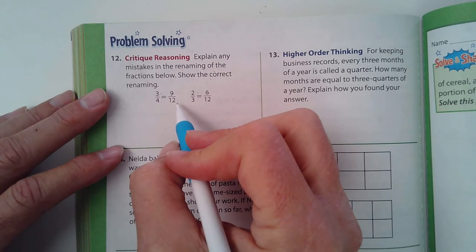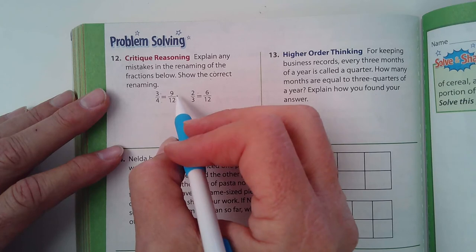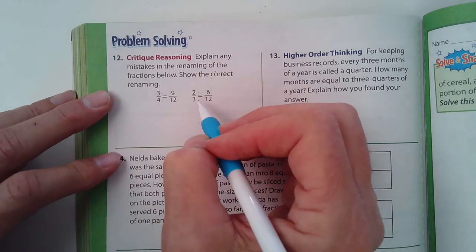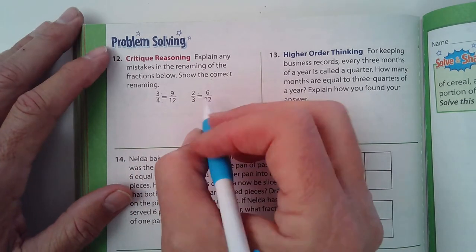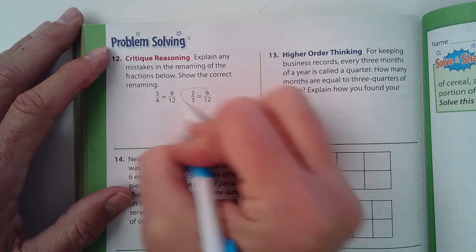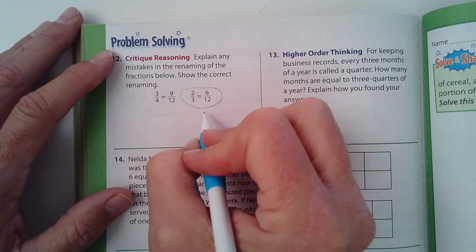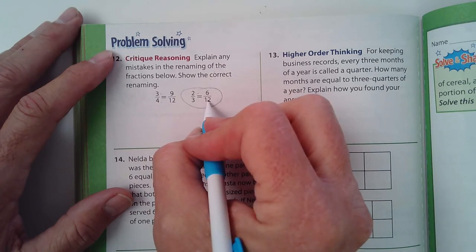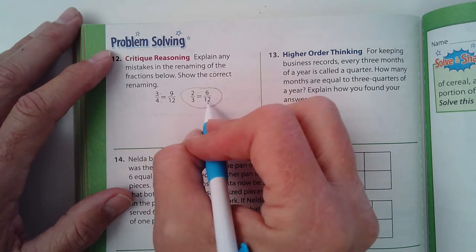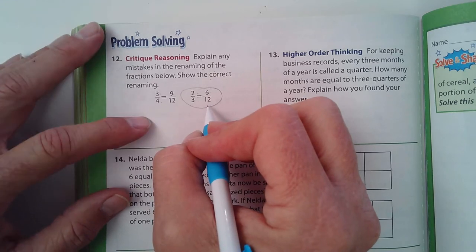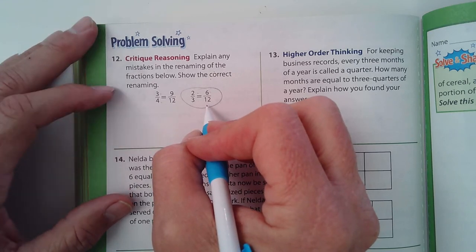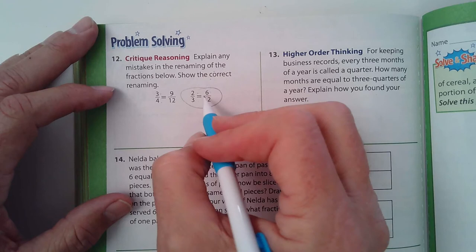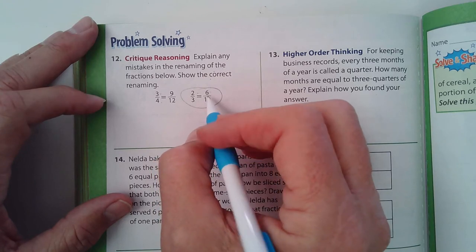That's four times. So this one should be—if two goes into six three times and three goes into, or three goes into twelve four times, it should be the same amount for each one. So show the correct renaming.